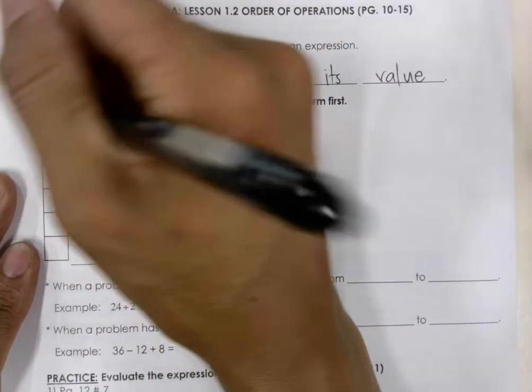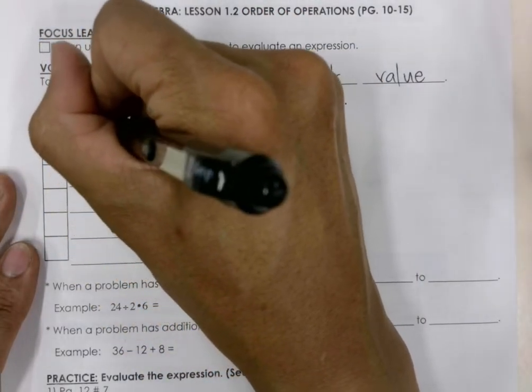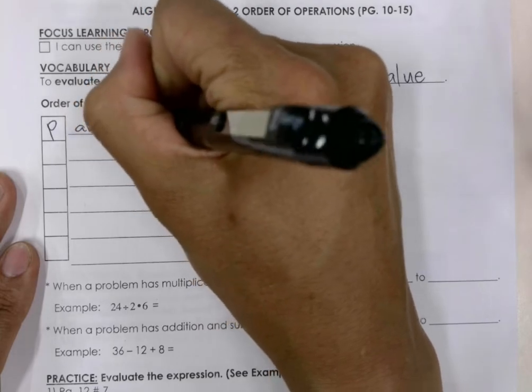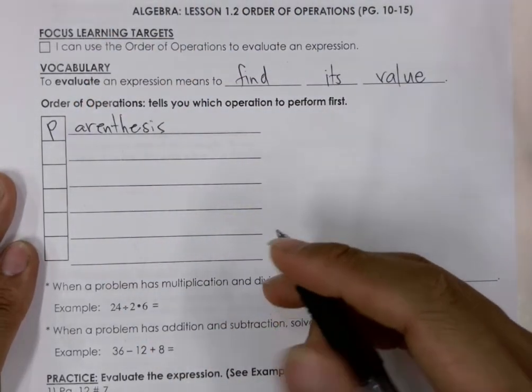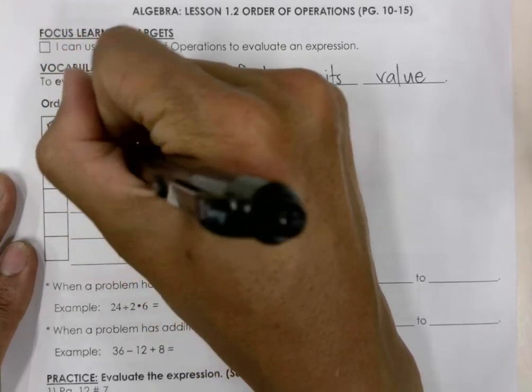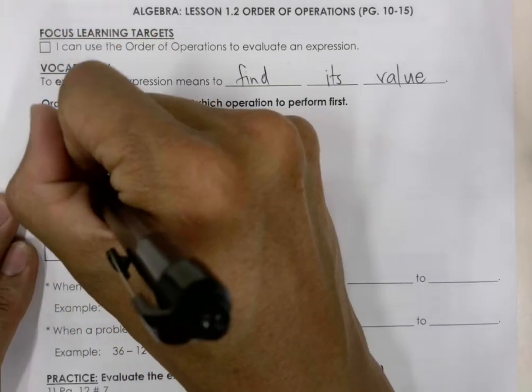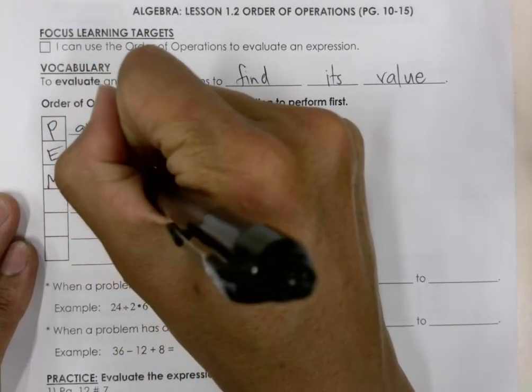The first order of operation would be P, parenthesis. The next one would be E, the exponents. The next would be M, Multiplication.